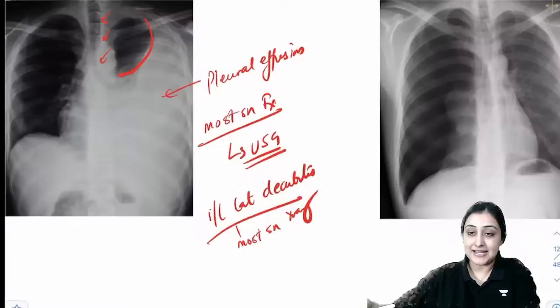Pneumothorax: black area with no bronchovascular markings. Management: if stable — ICD; if unstable (tension pneumothorax) — first needle thoracostomy, then ICD. Needle goes at second intercostal space in a child.